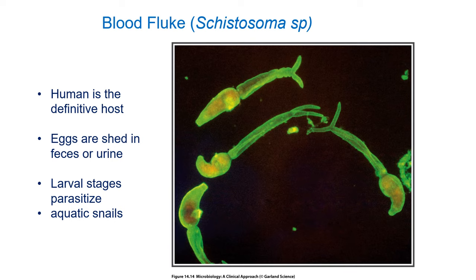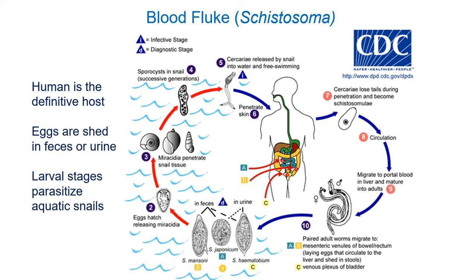Let's take a look at blood flukes. Blood flukes that infect humans belong to the genus Schistosoma, and there are several different species. The human is the definitive host; depending on the species, the eggs can be shed in the feces or in the urine. Once again there is a larval stage that will parasitize and reproduce asexually within snails. Blood flukes, as the name suggests, inhabit the bloodstream — they seek out a large blood vessel with lots of blood flow, staying put using suction cups. The males and females associate with each other for life; they're monogamous.